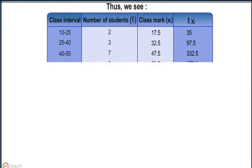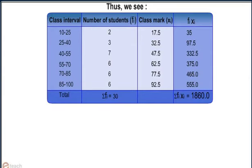From the table, we can see that summation fi equals 30, summation fi xi equals 1860.